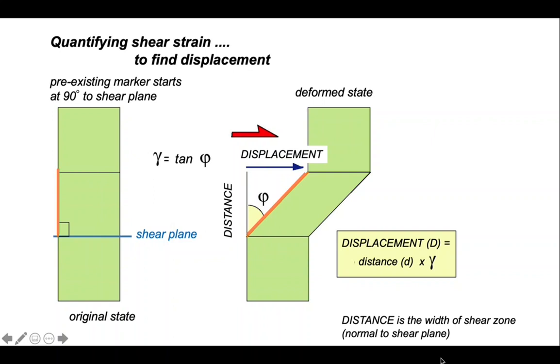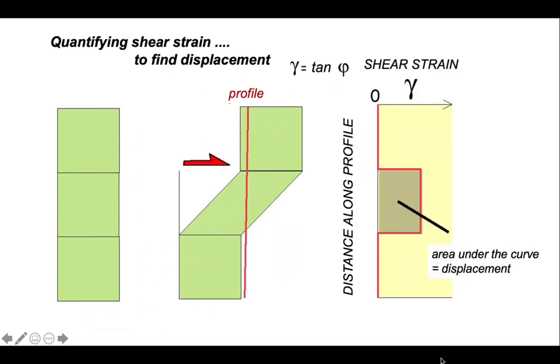What this relationship means is that essentially what we're doing is erecting a profile across the shear zone, measuring the shear strain along this profile, plotting the shear strain against distance across profile, and then integrating that curve. And that gives us the displacement. In this simple cartoon, we have an abrupt shear zone margin, top and base, and a single value for shear strain in it. So the graph is a simple step function.